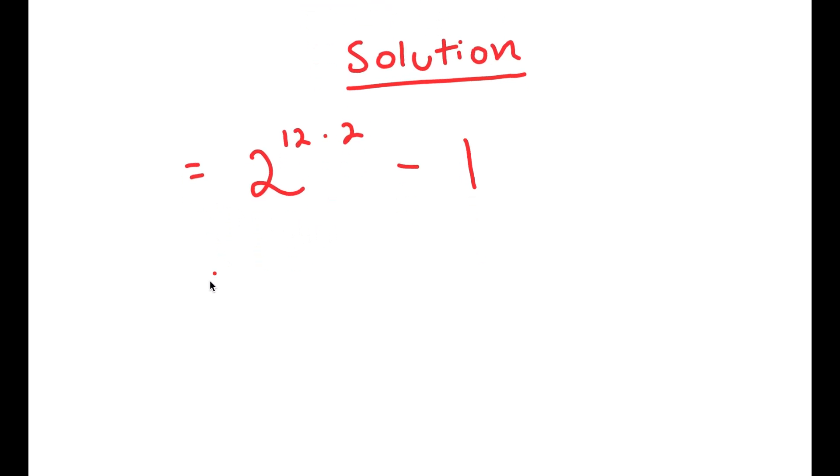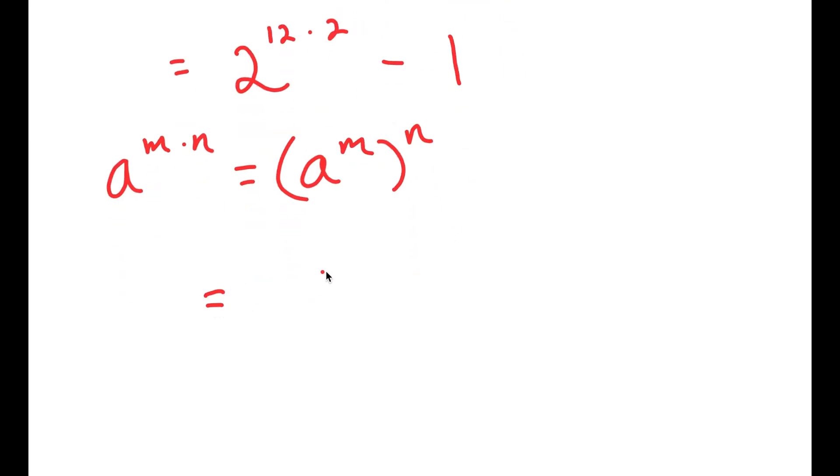Now, if I have something in the form a to the power of m times n, this is equal to a to the power of m to the power of n. So 2 to the power of 12 times 2, I can rewrite this as 2 to the power of 12 to the power of 2.